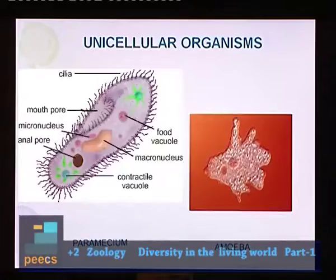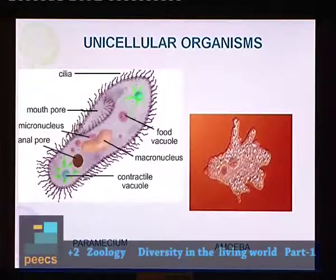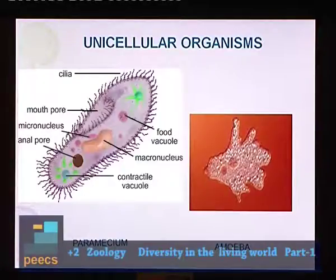The body of some organisms is made up of a single cell. Such organisms are called unicellular organisms. Two examples are paramecium and amoeba. These organisms have only one cell in their body, which is why we call them unicellular organisms.